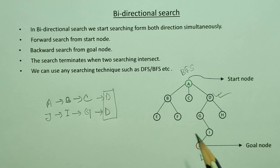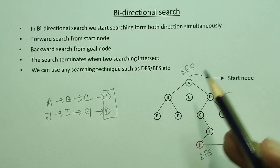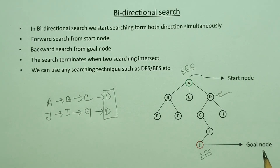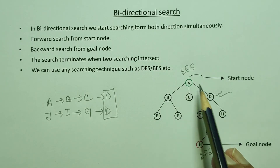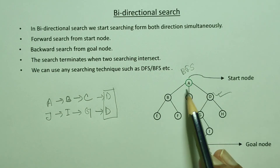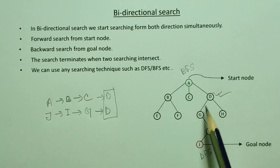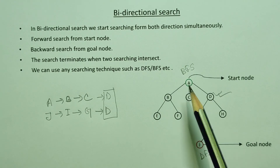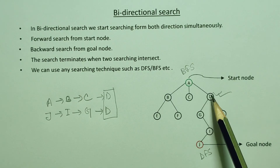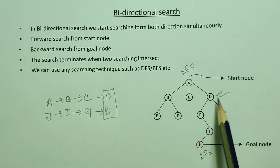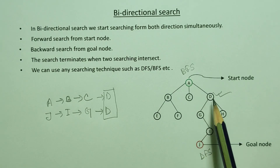This means we set the first direction in both directions simultaneously. This searching algorithm is effective and well-structured. Since this is a bidirectional search in which BFS and DFS are used, it is highly efficient for finding the goal node.